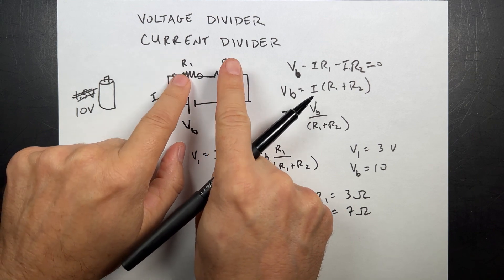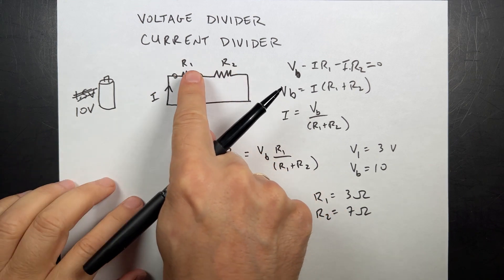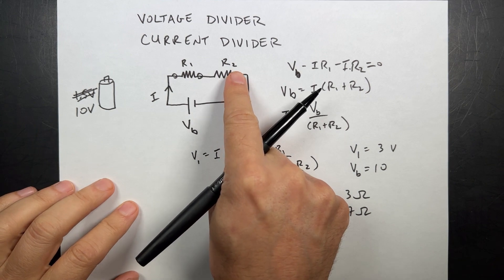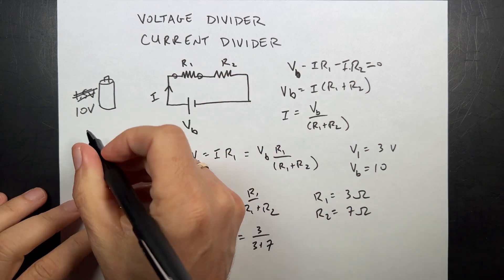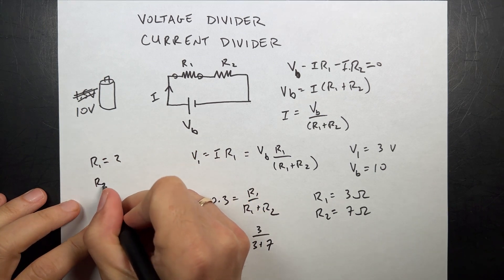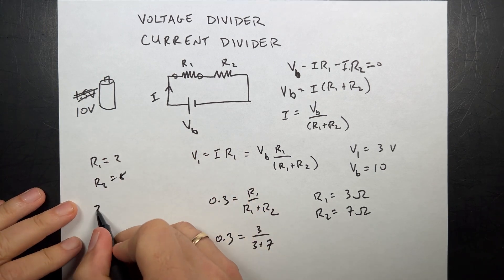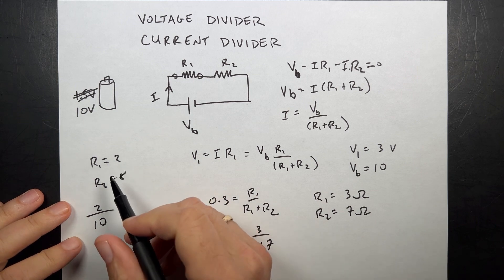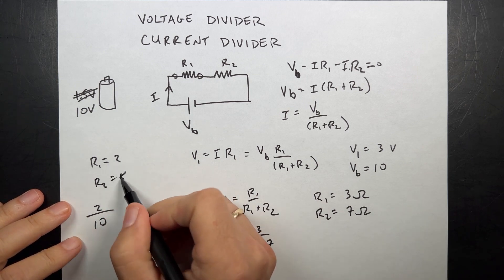So if I had a 10 and a 10, well that's 50% of the voltage on this, 50% on that. If I had R1 is 2, R2 is 8, then it would be 8 over 10. Oh I shouldn't have picked 10, that was a bad one. Well you can pick anything.